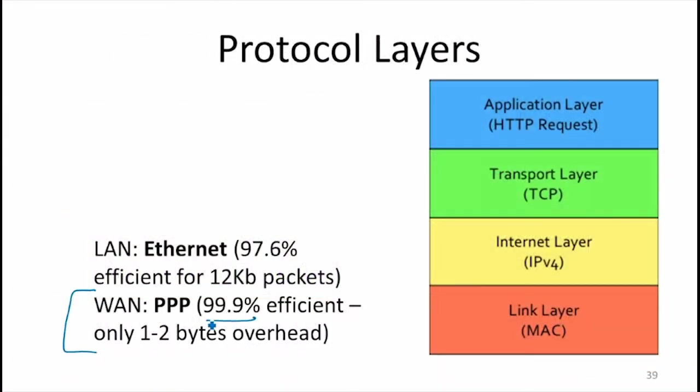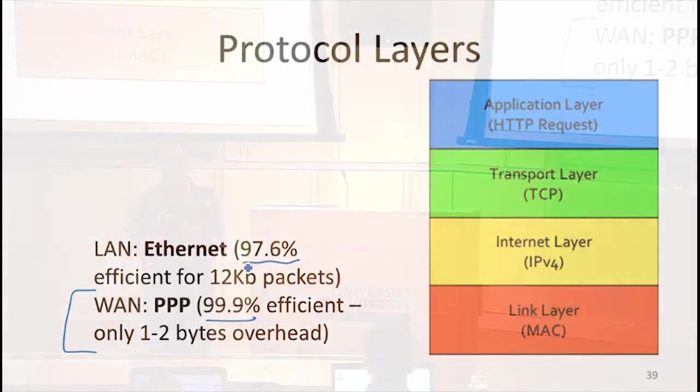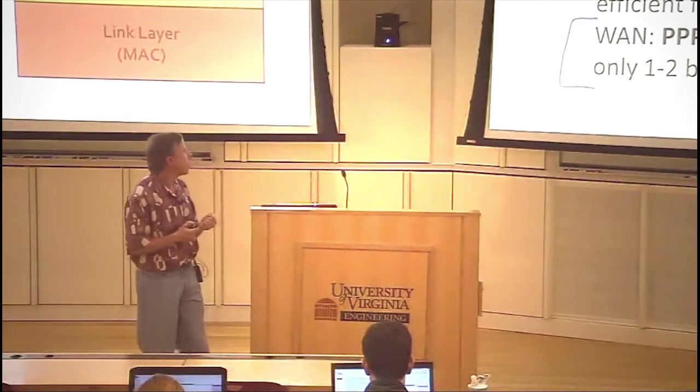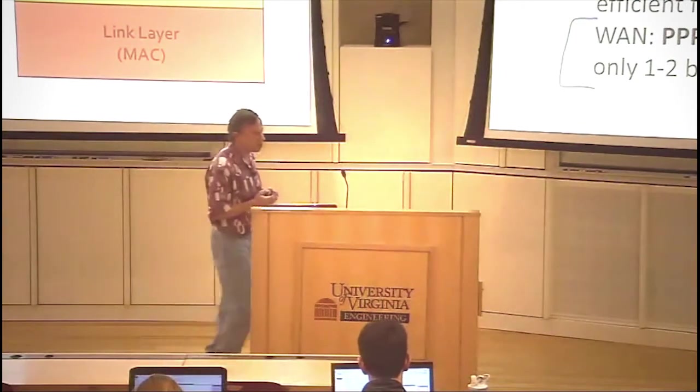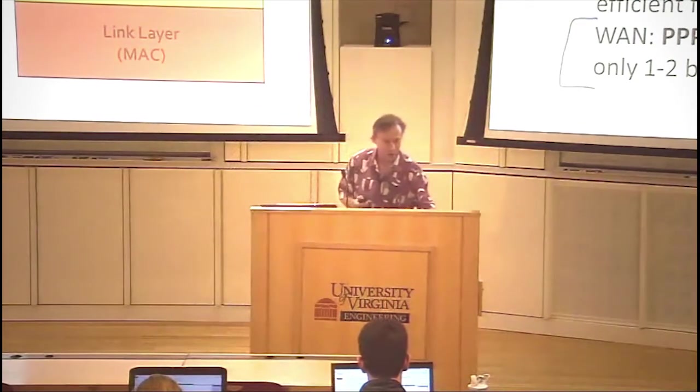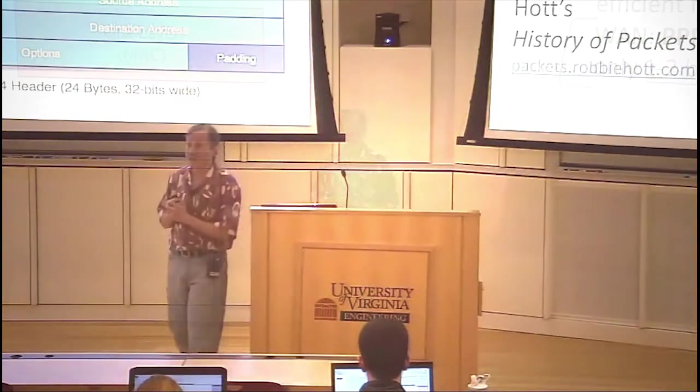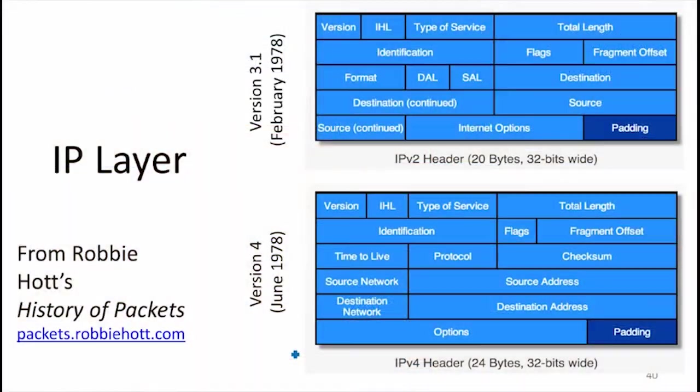On the wide-area network, it's even more efficient. So that's fairly inefficient. Ethernet, and there's a lot of complexity to the Ethernet because you've got all these devices sharing the network in a fairly uncontrolled way. On the wide-area network, it's mostly using PPP, which only has one or two bytes of overhead. What's more interesting is the IP layer. I'm showing you some pictures from a project a student did last year that looks at what's in the spec for IP and TCP over the years and how that's changed. This is how it changed between version 3.1 and version 4.